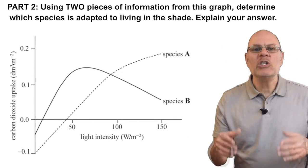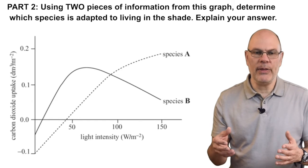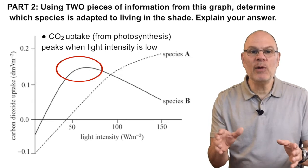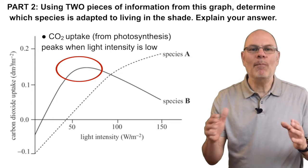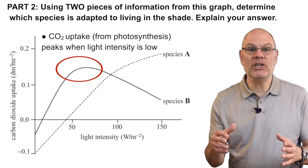Let's look at part two. Species B lives in the shade. How do you know? It's indicated by a couple of things. First of all, species B reaches its maximum rate of CO2 uptake at much lower light intensity than species A. That's an adaptation for living in the shade.